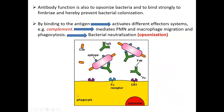The antibody function is not just directly affecting the antigen and opsonizing bacteria — also to bind centrally to the fimbriae and thereby prevent bacterial colonization. We have another process called opsonization, in which by binding to the antigen, this causes activation of different effector systems — like for example complement. All of these work together mediating PMN and macrophage migration and phagocytosis to deal with bacterial neutralization. So the process in which the antibody mediates macrophages and PMN in neutralization of the antigen by phagocytosis is called opsonization. The PMN and macrophage cannot migrate and phagocytose these bacterial antigens without the mediation of the antibody. This whole mediation process is called opsonization.